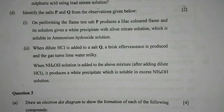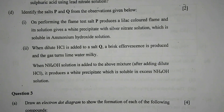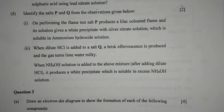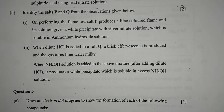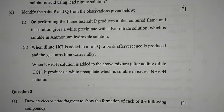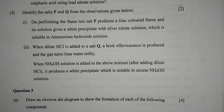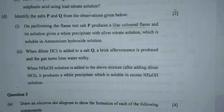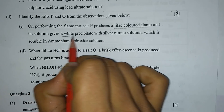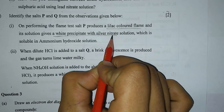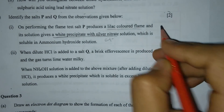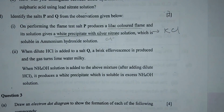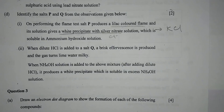Question 2d: identify the salts P and Q. Number 1 — on performing the flame test, salt P produces a lilac colored flame, and its solution gives a white precipitate with silver nitrate solution which is soluble in ammonium hydroxide. The lilac colored flame is given by potassium, and a white precipitate soluble in ammonium hydroxide with silver nitrate is given by the chloride ion. So the answer is potassium chloride.